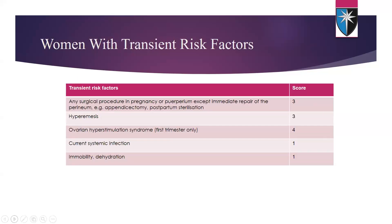Transient risk factors include: any surgical procedure in pregnancy or puerperium except immediate perineal repair — for example appendicectomy or postpartum sterilisation — scoring three; hyperemesis gravidarum, which is very important, scoring three; ovarian hyperstimulation syndrome scoring one; systemic infection scoring one; and immobility or dehydration scoring one.